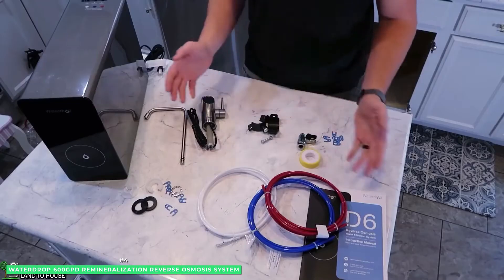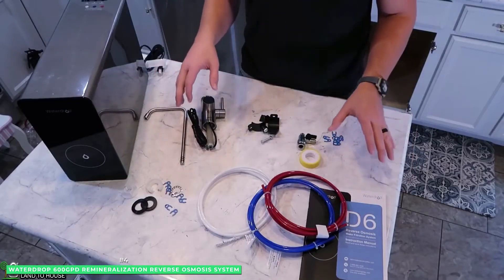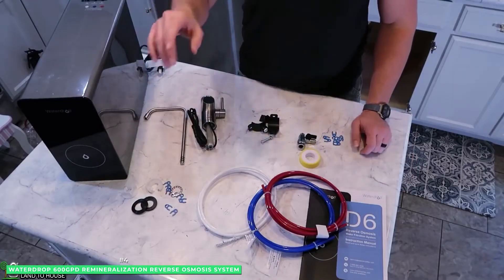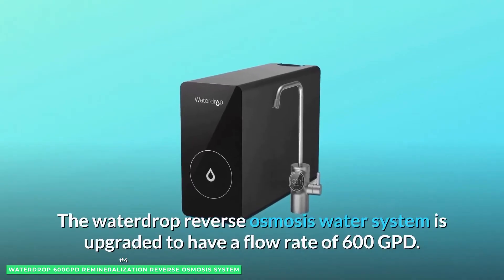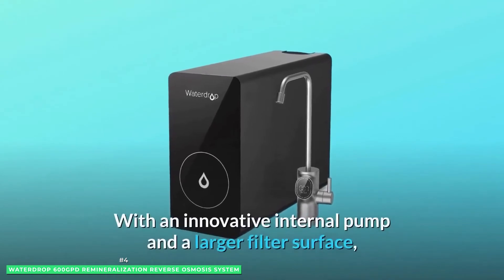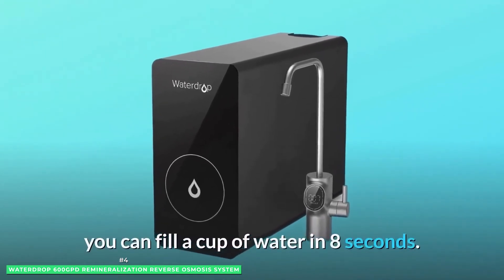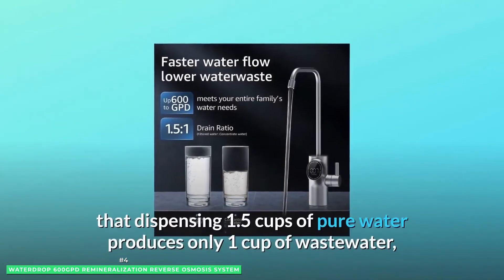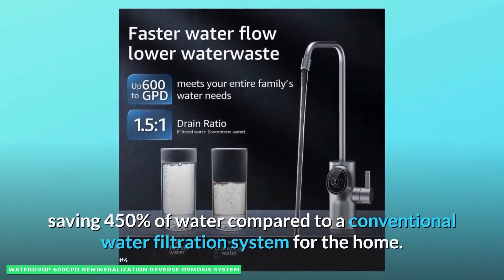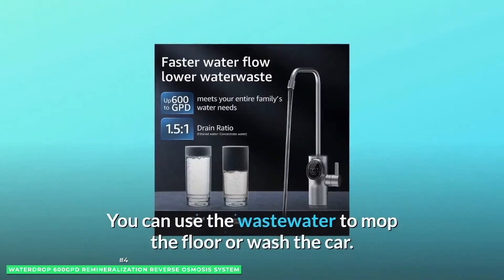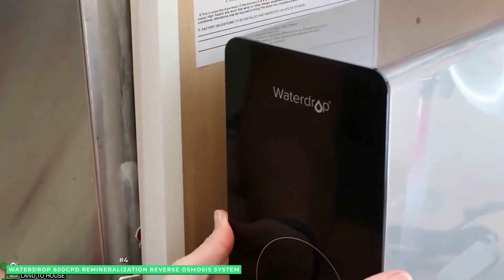When you taste quality remineralized water, you get perfectly balanced alkaline water hitting the pH sweet spot of 7.1 to 8. The Waterdrop D6 600 GPD tankless RO water filter system uses advanced 6-stage RO fine filtration and is proven to reduce over 1,000 harmful substances.